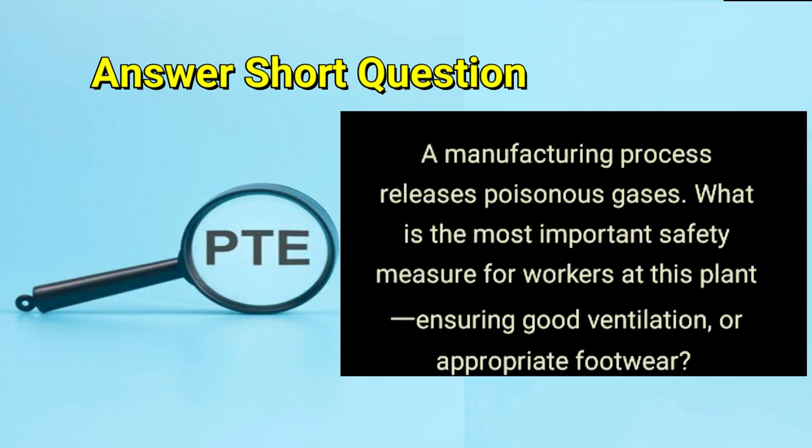A manufacturing process releases poisonous gases. What is the most important safety measure for workers at this plant — ensuring good ventilation or appropriate footwear? Answer: ensuring good ventilation.